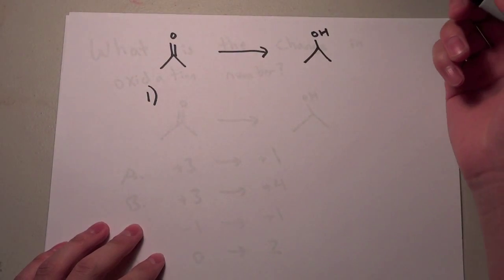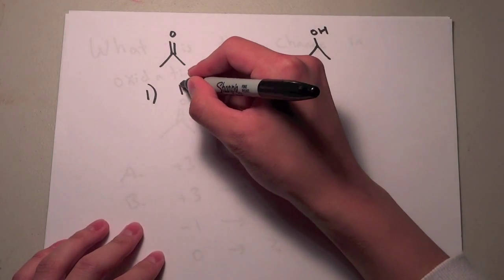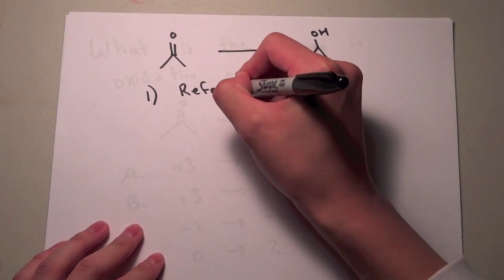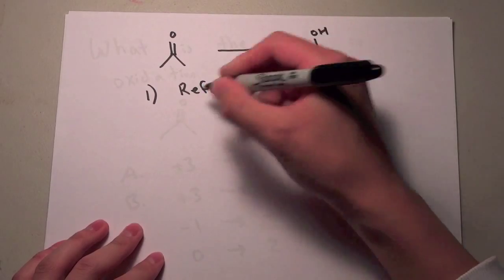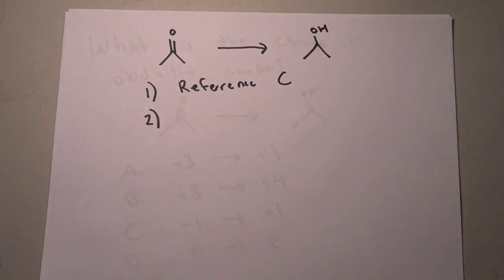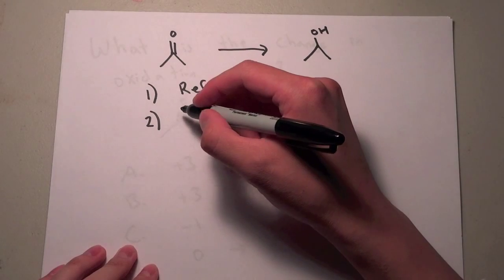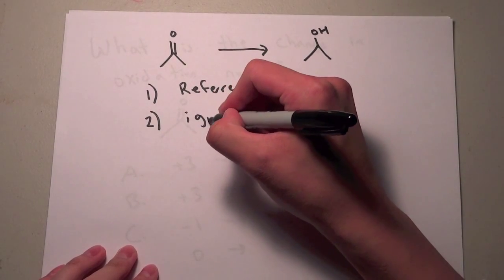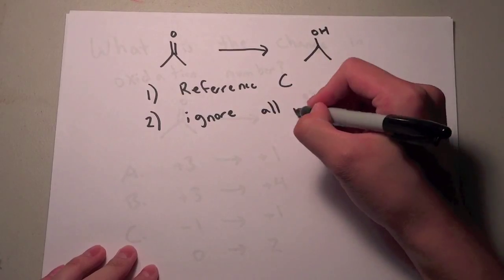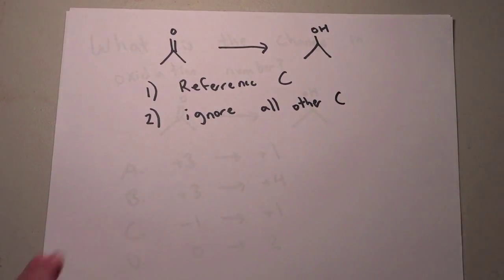So the first thing you want to do is you want to find a reference carbon. So you choose a reference carbon and that is going to be the carbon that is either going to be oxidized or reduced. And the next thing you want to do is ignore everything else. Ignore all the other carbons that aren't involved in the oxidation or reduction.